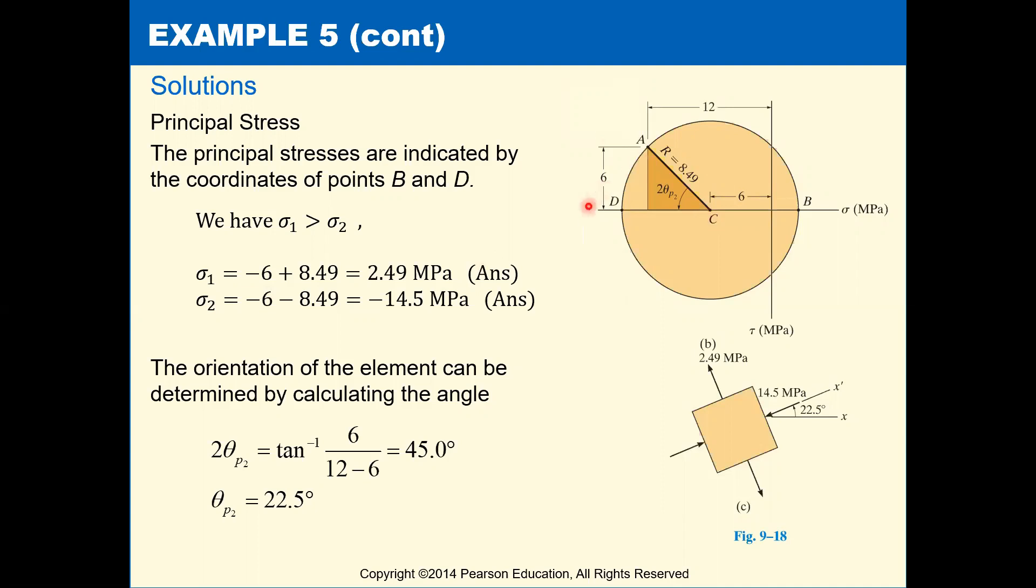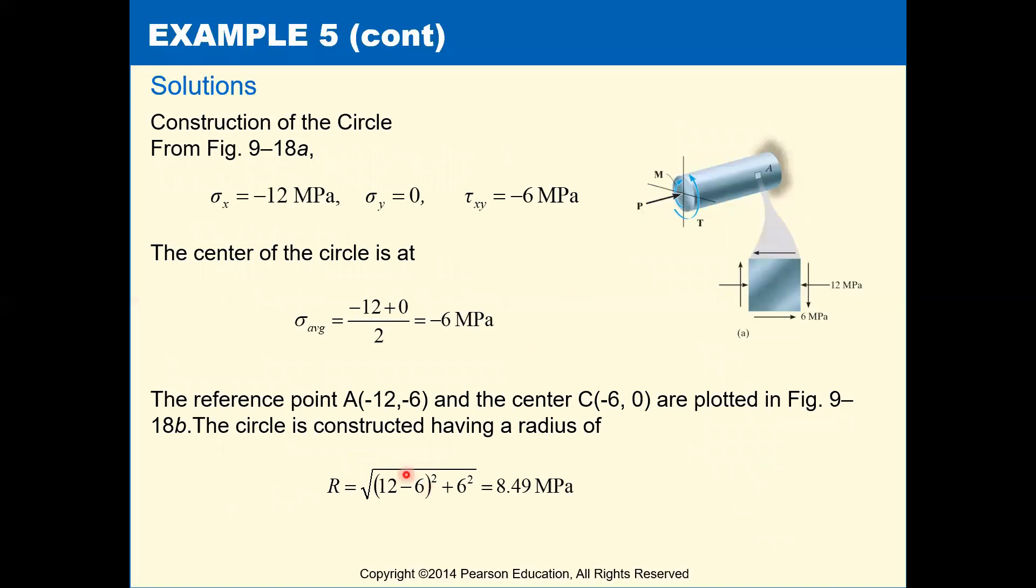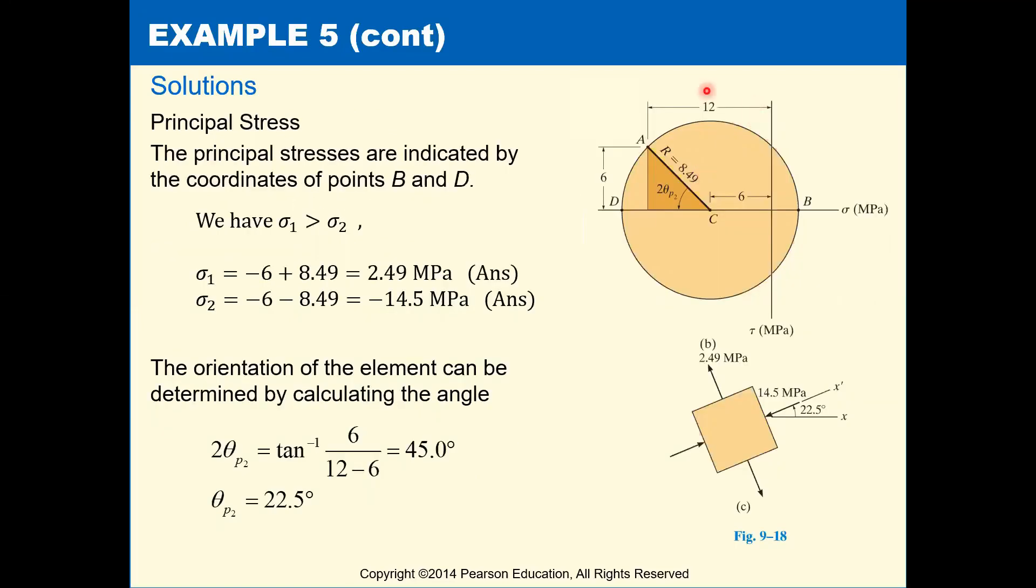The previous slide showed how to calculate this radius, but we're just going to use the Pythagorean theorem where the base of our triangle is 6 and the height of our triangle is 6. It's coming from 12 minus 6, it gives us 6. 8.49.